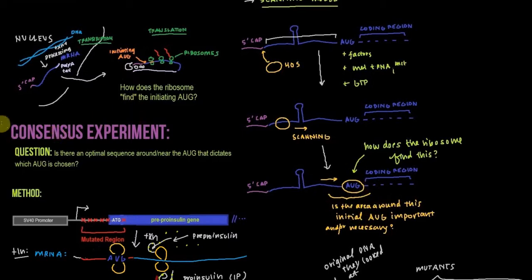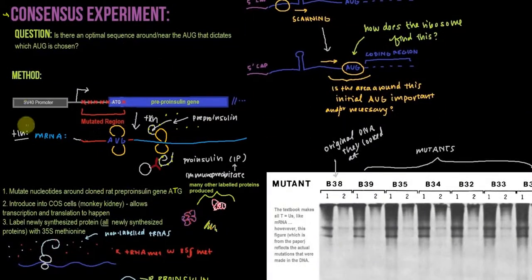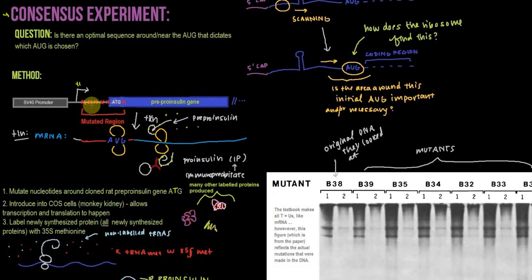The key question for this first experiment — the consensus experiment — is: is there an optimal sequence around or near this initiating AUG that dictates which AUG actually gets chosen? The researchers create a construct with an SV40 promoter, with the transcription start site, and then the pre-proinsulin gene. The beginning of that gene starts with an ATG — we're talking about DNA here, so it's ATG in the non-template strand of the DNA.